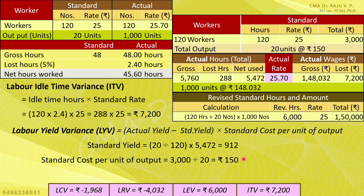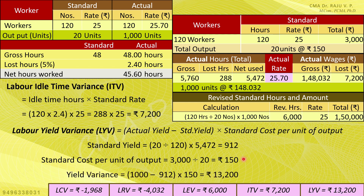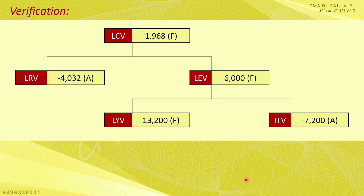The rate variance and efficiency variance together equal the labour cost variance. The idle time variance is a component of the efficiency variance. These variances reconcile back to the total labour cost variance.